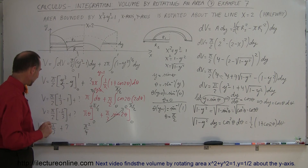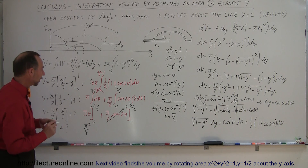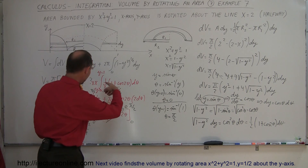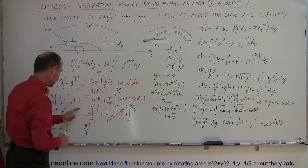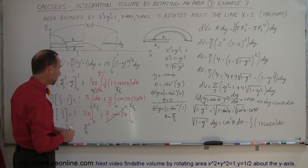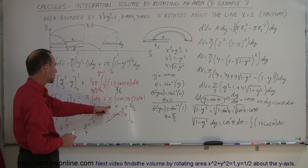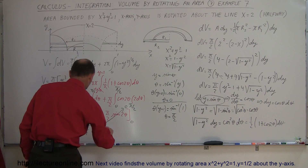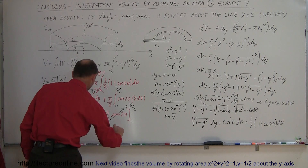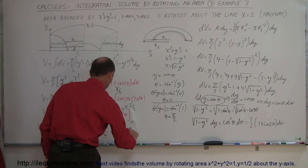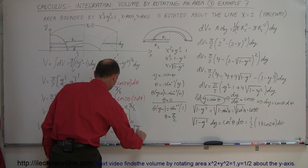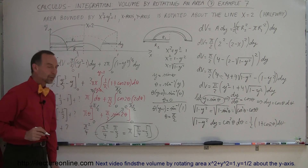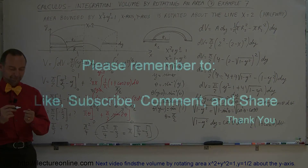So combining both parts, the total volume equals negative pi over 3 plus pi squared over 4. This can be written as pi times (pi over 4 minus 1 over 3). This is the correct answer for the volume, and that's how we do it.